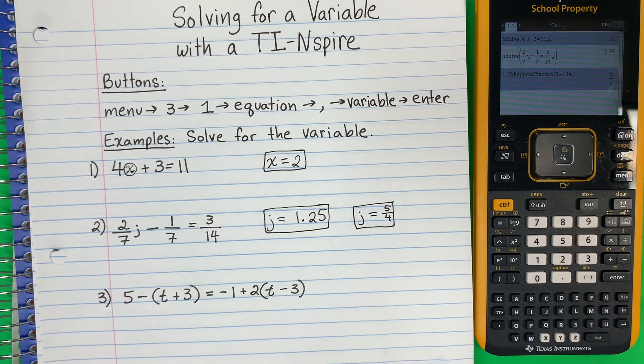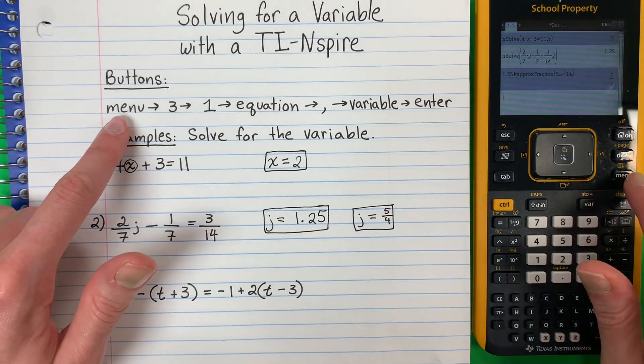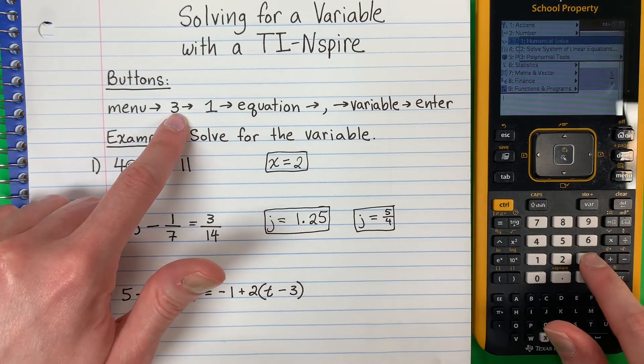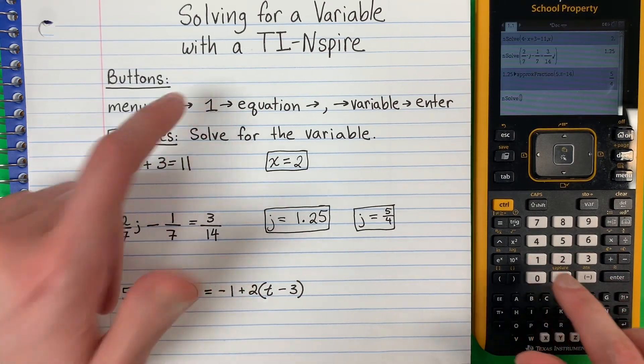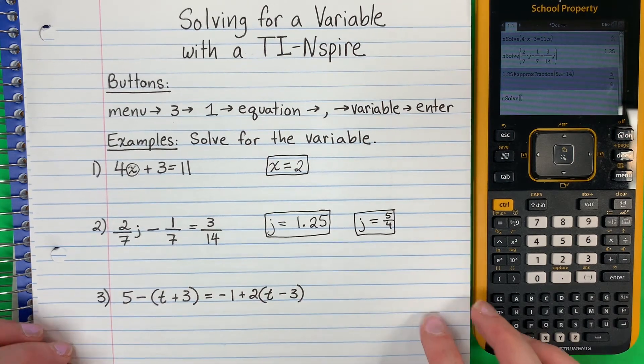Let's go ahead and do number three. Número tres. Okay. Again, otra vez. Menu. Three. One. We're going to put the equation. Put the equation exactly the same. Exactamente igual. Okay.